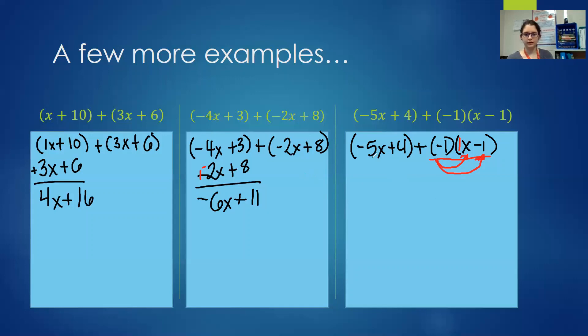We're going to distribute the negative 1 to the 1x and the negative 1 to the minus 1. I'm going to go ahead and rewrite my first set of parentheses. So negative 1 times 1x is a negative 1x. Negative 1 times negative 1 is a plus 1. Now let's stack. I'm going to change my subtract 1 into plus a negative 1. So negative 5 plus negative 1 is negative 6x. 4 plus 1 is 5.